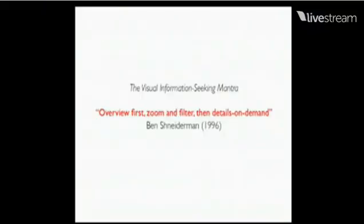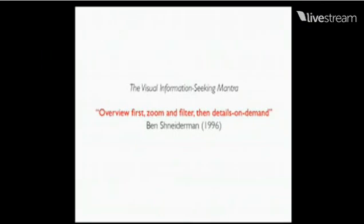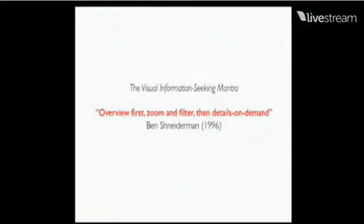There is a mantra pushed out by Ben Schneiderman in 1996 called The Visual Information Seeking Mantra — you will find it all over the internet. Schneiderman has written broadly about information visualization, and this sentence summarizes how to balance the presentation layer and the exploration layer. First, you overview the data: what are the most important points? That's the presentation layer. Once you've shown readers the most important points of your data and your story, then you allow readers to navigate — you let them zoom, filter, and see all the details. Both are equally important.